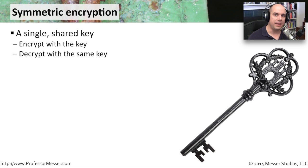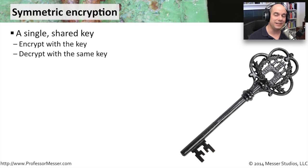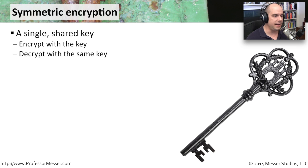Symmetric encryption is a method where we are using exactly the same key to encrypt information and decrypt the information. So if we need to encrypt data and somebody on the other side needs to decrypt it, we need to somehow get that key to them so that they will be able to decrypt that data.